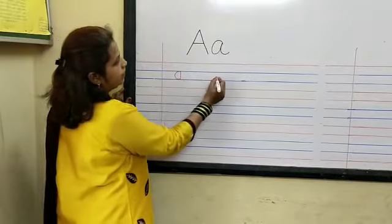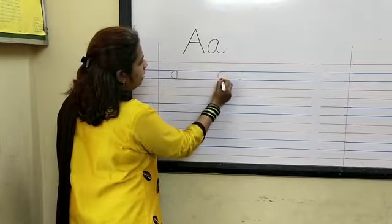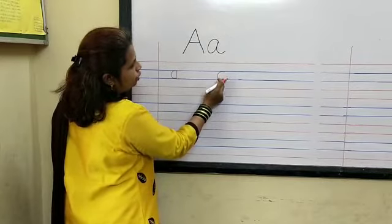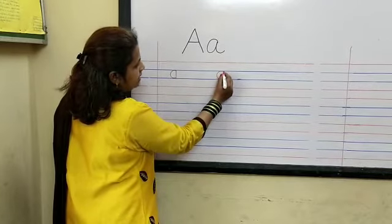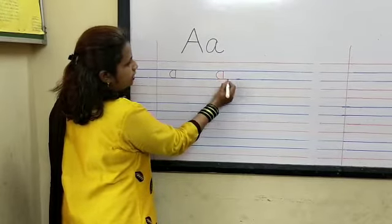A big curve touching both blue lines, then a standing line and a small curve. A.